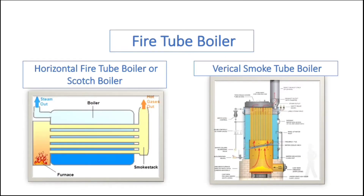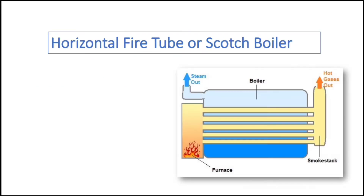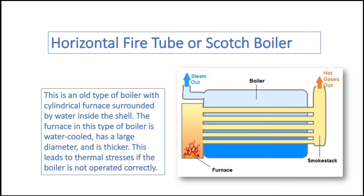There are two types of fire tube boiler on board ships: the horizontal fire tube or scotch boiler, and the vertical fire tube boiler. The horizontal fire tube or scotch boiler is an old type of boiler with a cylindrical furnace surrounded by water inside the shell. The furnace in this type of boiler is water cooled, has a large diameter, and is thicker. This leads to thermal stresses if the boiler is not operated correctly.